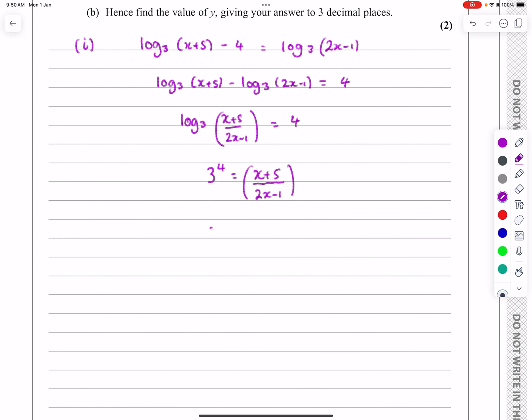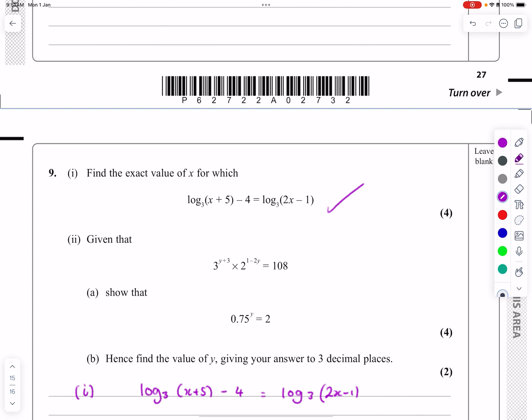So 3⁴ is 81, we get (x+5)/(2x-1) = 81. This is just rearranging: x+5 = 81(2x-1), so x+5 = 162x - 81. Rearranging, we get 86 = 161x, so x = 86/161. Although that doesn't look like a particularly neat answer, that is actually the correct answer for part 1.